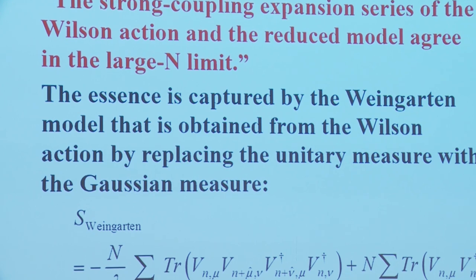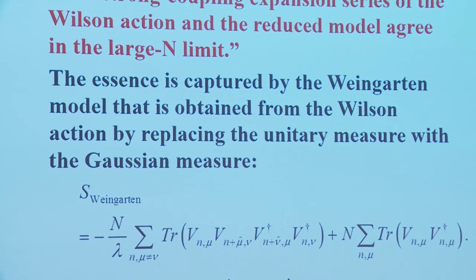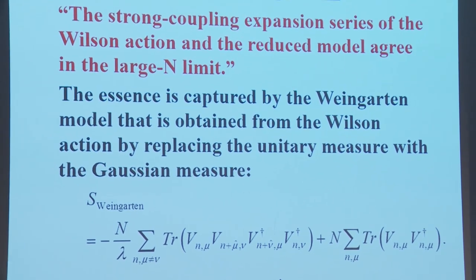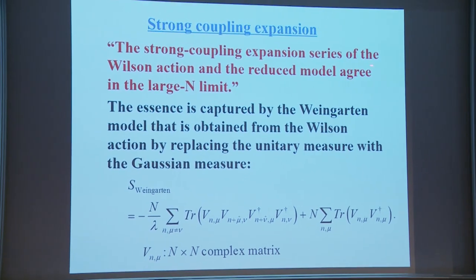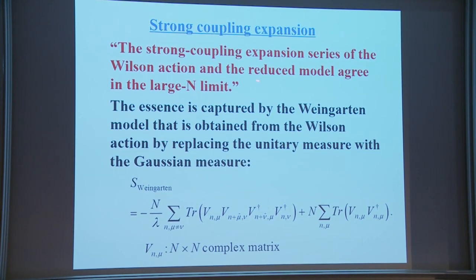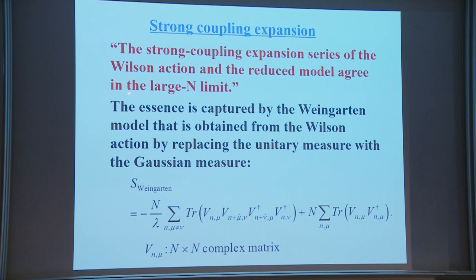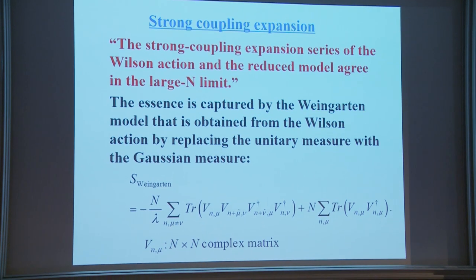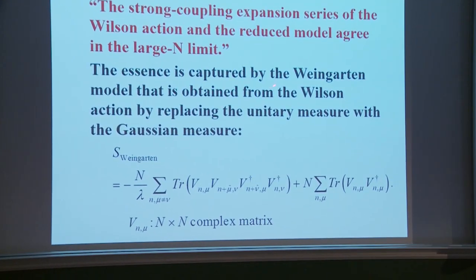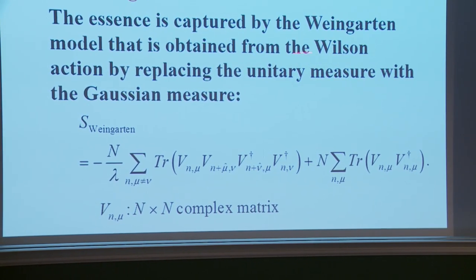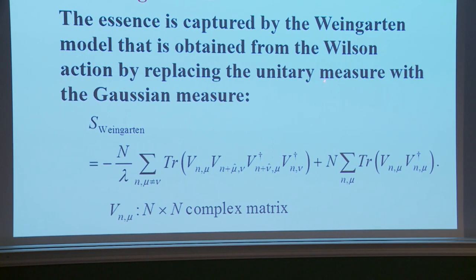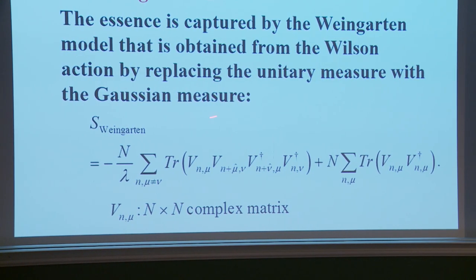The next proof is the strong coupling expansion. The statement is that the strong coupling expansion series of the Wilson action and the reduced model agree in the large-N limit. The essence is captured by the Weingarten model, obtained from the Wilson action by replacing the unitary measure with the Gaussian measure.